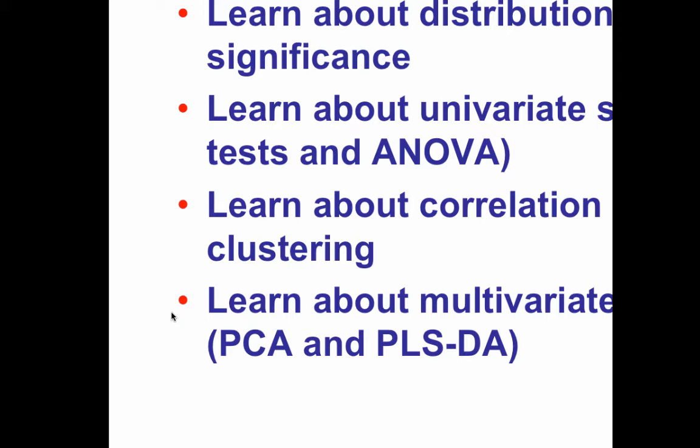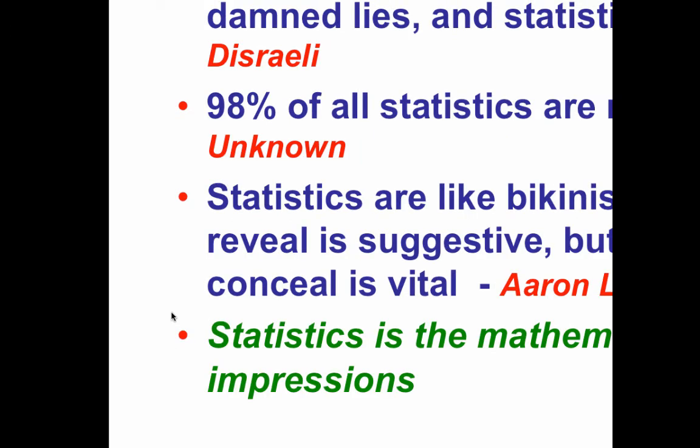Statistics is something that a lot of people hate, and it's sometimes difficult to learn. I think a lot of us have heard the quote: there are three kinds of lies — lies, damned lies, and statistics. It's often attributed to Mark Twain, but it was actually made by Benjamin Disraeli, who was the Prime Minister of England. I think Twain picked it up. And then: 98% of all statistics are made up — which might also be true.